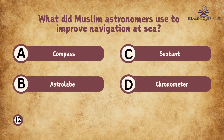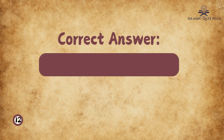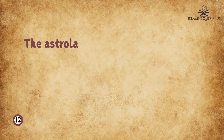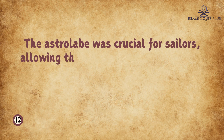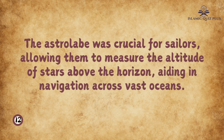Question 12: What did Muslim astronomers use to improve navigation at sea? A. Compass, B. Astrolabe, C. Sextant, D. Chronometer. The correct answer is B. Astrolabe. The astrolabe was crucial for sailors, allowing them to measure the altitude of stars above the horizon, aiding in navigation across vast oceans.